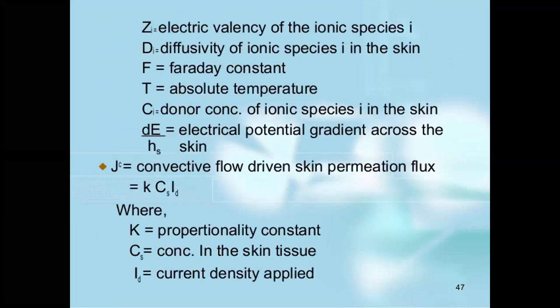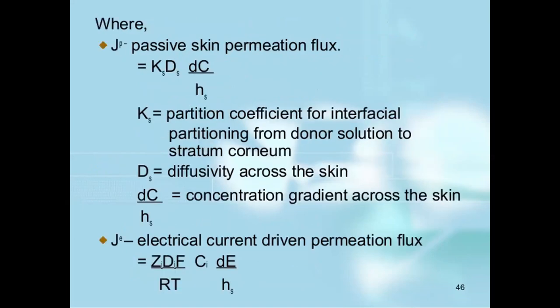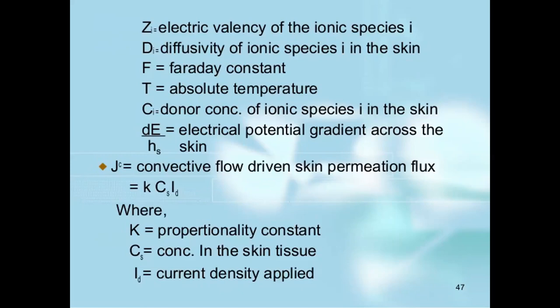The JE equation involves the electrical valency of the ionic species, the diffusivity of the ionic species, the Faraday constant, the absolute temperature, the donor concentration, and the electrical potential gradient across the skin. JC is the convective flow-driven skin permeation flux. So, there are three types of flux: first, passive skin permeation flux; second, electrical current-driven permeation flux; and third, convective flow-driven skin permeation flux.